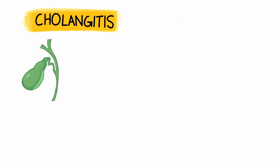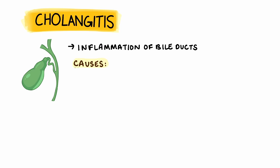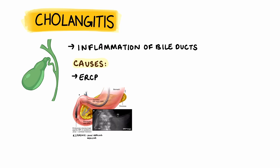Now let's look at acute cholangitis, which is the inflammation of the bile ducts. The main difference to remember is the location of the pathology. Similar to cholecystitis, this can cause high mortality due to the risk of sepsis. In terms of causes, there are two main categories: obstruction via gallstones or infection from an ERCP procedure.